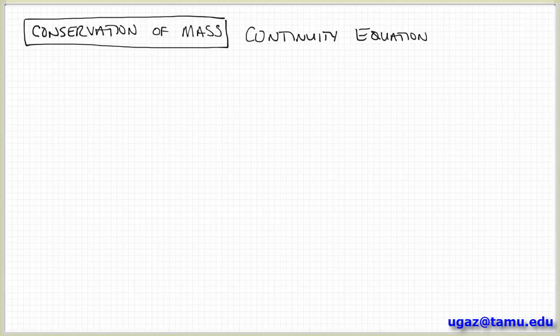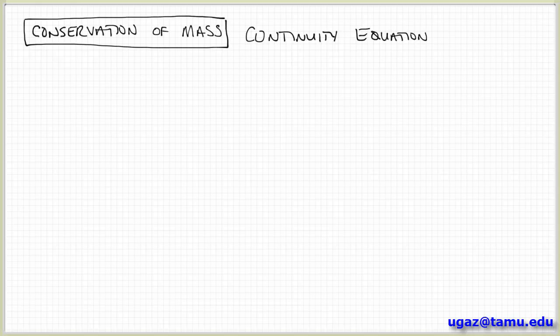In the previous video we introduced the concept of conservation laws and got started with the conservation of mass. The idea is that we want to be able to describe the inflow, outflow, and accumulation of some quantity inside a system. In this case we're talking about mass, and we talked about how to describe inflow and outflow of mass through some surface that has some area dA and is oriented with some normal vector n.